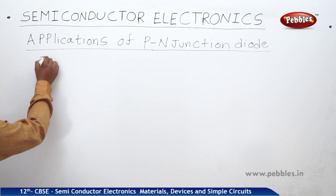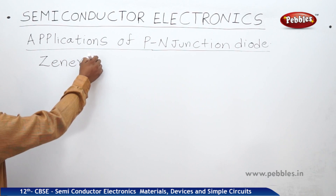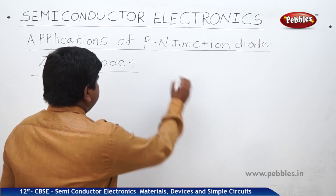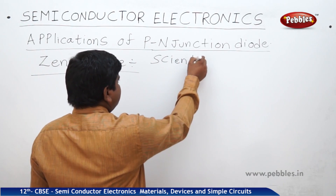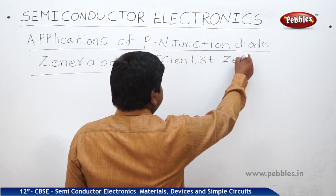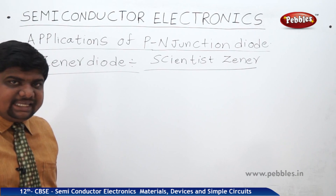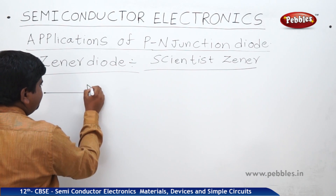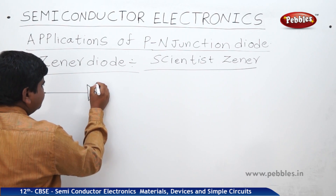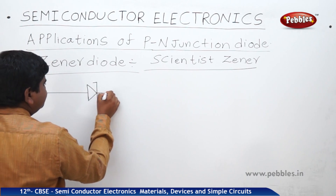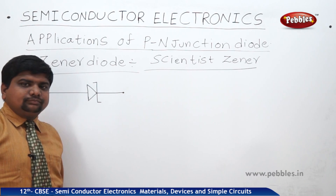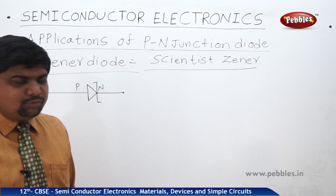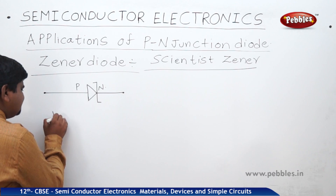Next, the Zener diode. It was a discovery of a scientist called C. Zener. What is the symbol of the Zener diode? After this, we will go to the uses of this — how it will be used. This is the P-type and N-type — so, a PN junction diode, but it is a Zener diode. What is the use of this Zener diode? The Zener diode will act as a voltage regulator.